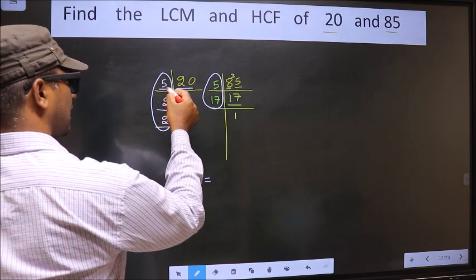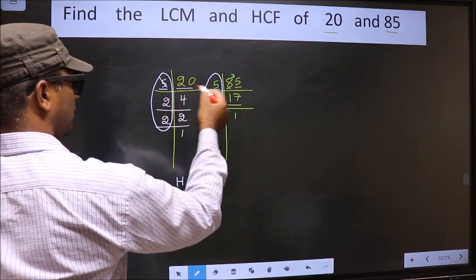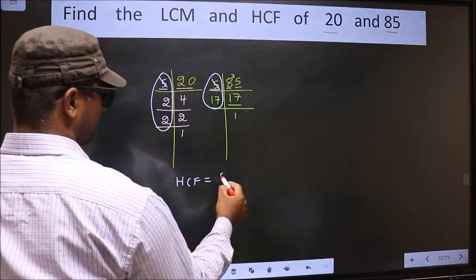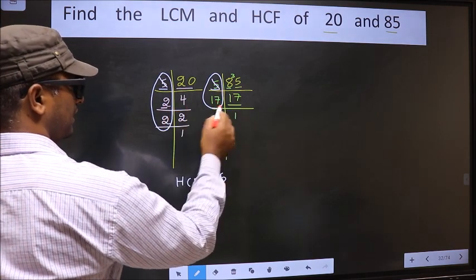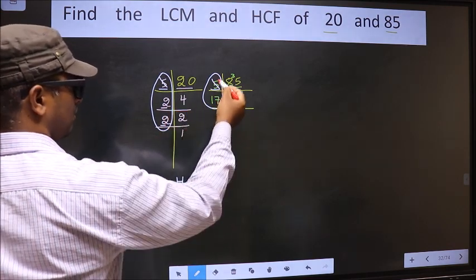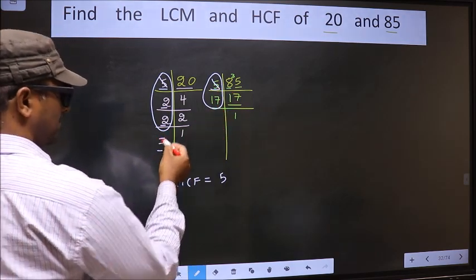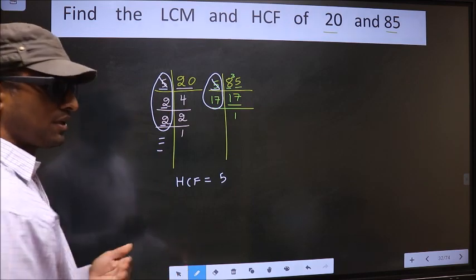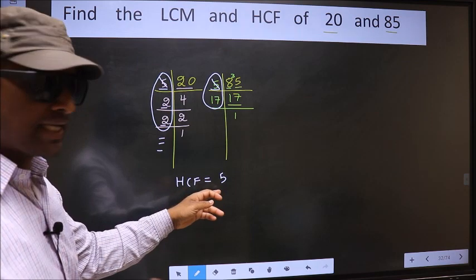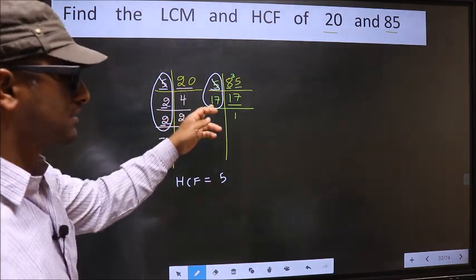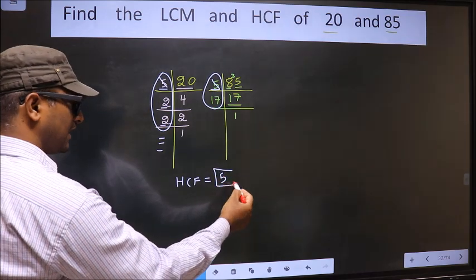Starting with the number 5. Do we have 5 here? Yes. So you cut 5 right here. Next number 2. Do we have 2 here? No. Next number 2. Do we have 2 here? No. No more numbers have been left. Therefore, we got only one number, 5, present in both the places. So 5 itself is our HCF.